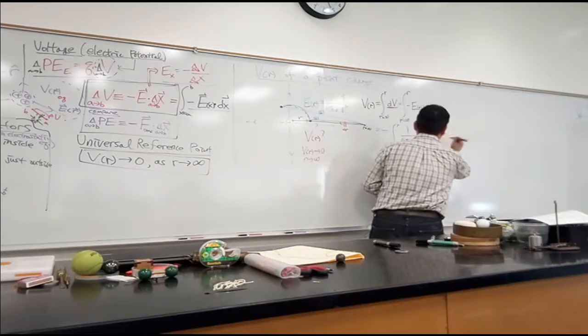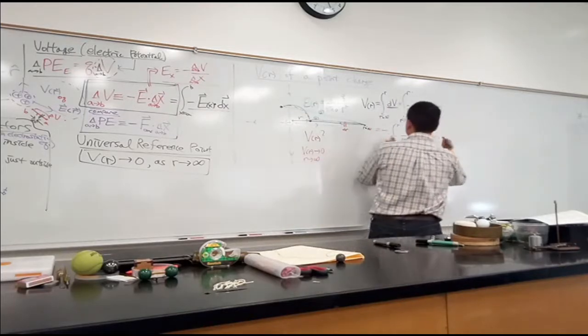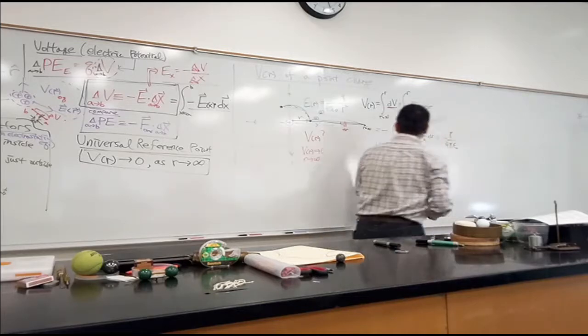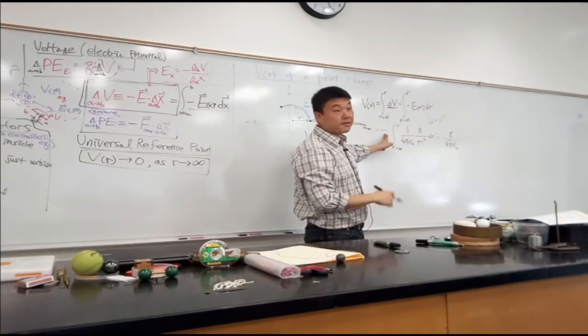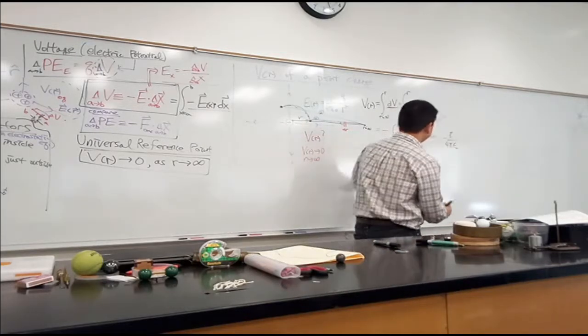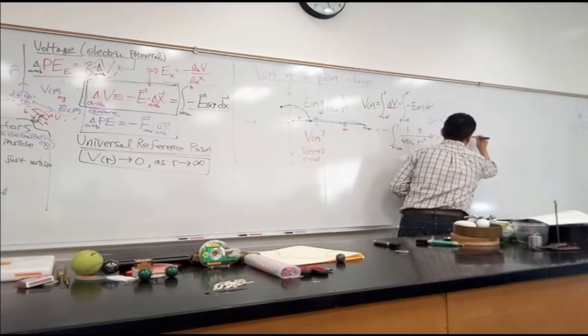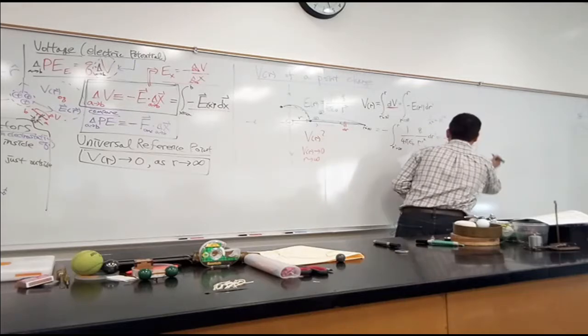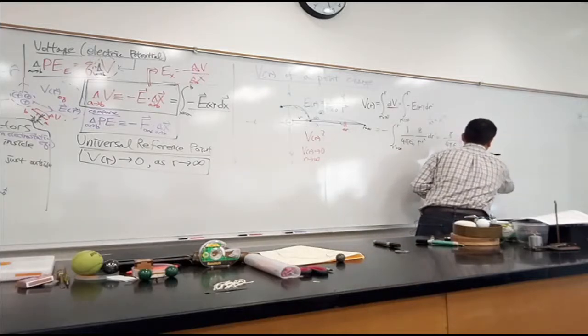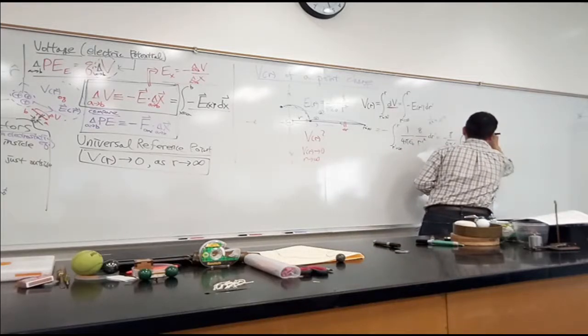All right, so let me do this. So I'm going to factor out everything that's constant, minus q over 4 pi epsilon naught. I'm trying to be careful with the sign this time, because I'll explain it later. Antiderivative of this thing here, minus 1 over r prime, evaluated from infinity to r. So r prime goes from infinity to r.